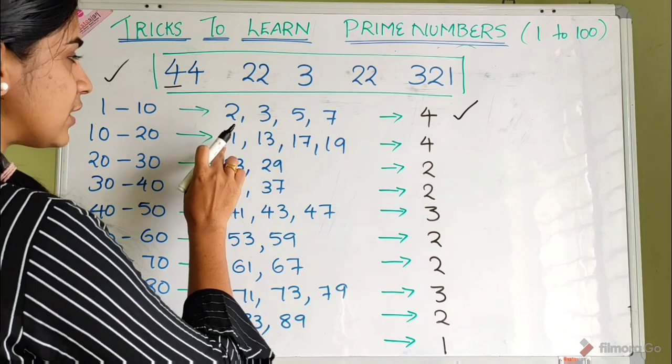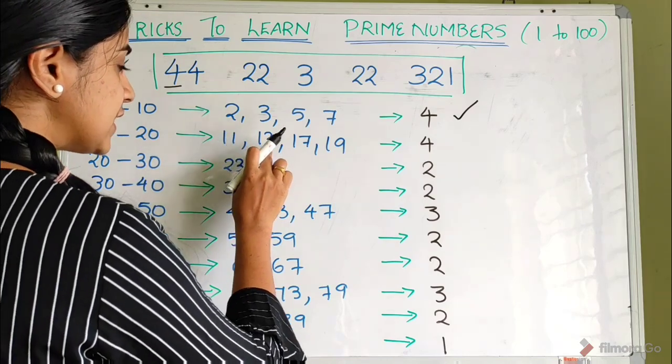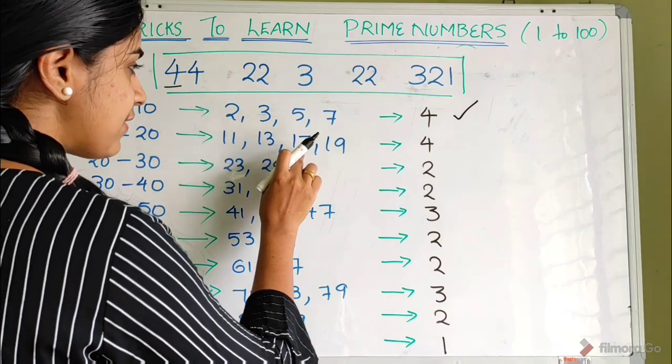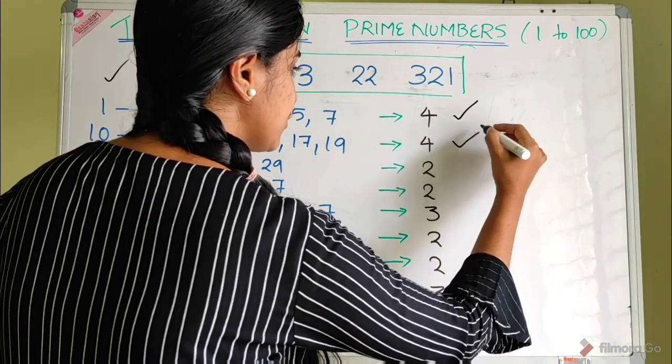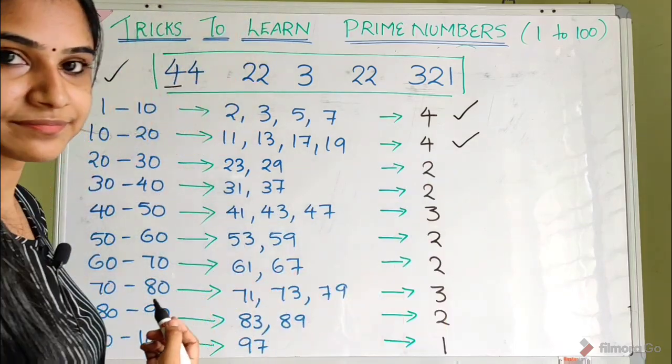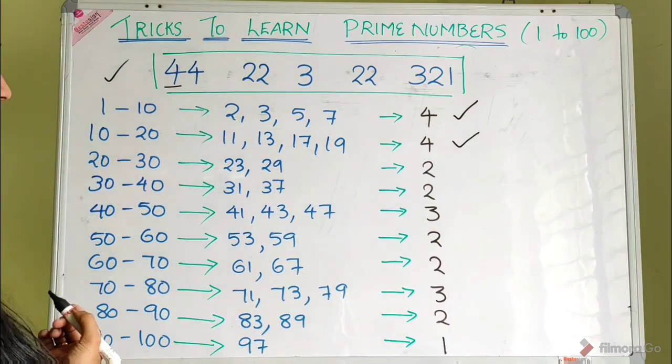Between 10 and 20, the prime numbers are 11, 13, 17, and 19. That's 4 prime numbers.